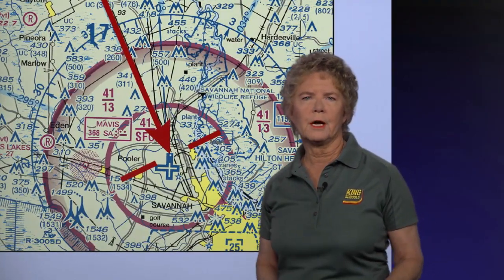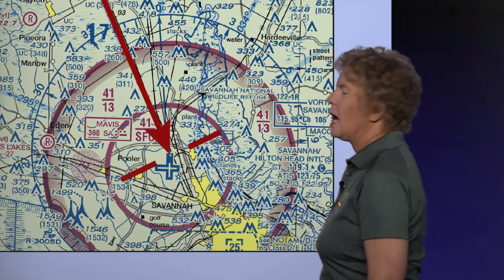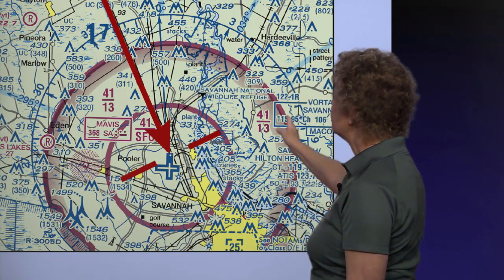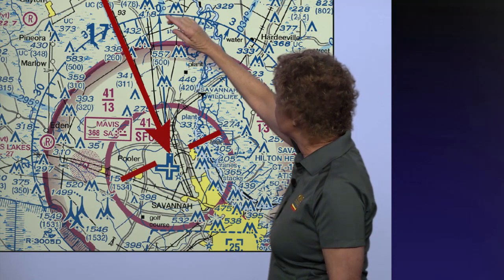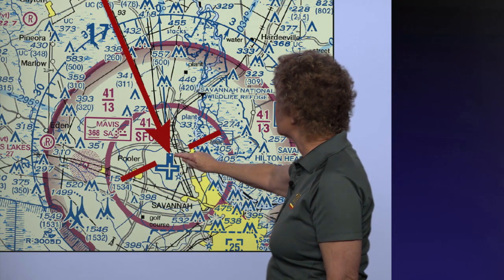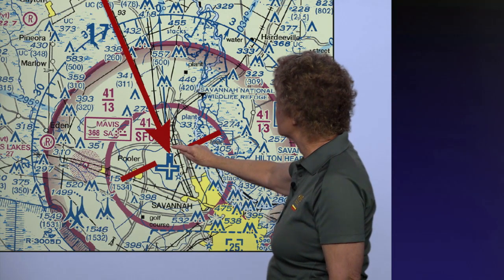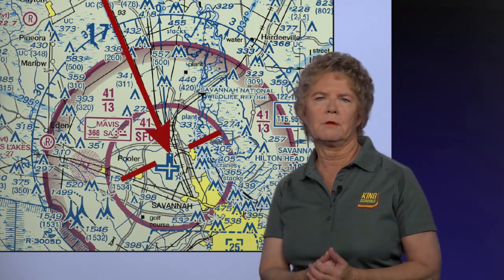Now the Savannah VOR is difficult to see, but there are a couple of things that will help you find it. Here is the identification box, and here is the compass rose for the VOR. Find the zero point and follow that arrow down, and you'll find the center of the compass rose, which is where the VOR is — on the Savannah Airport.